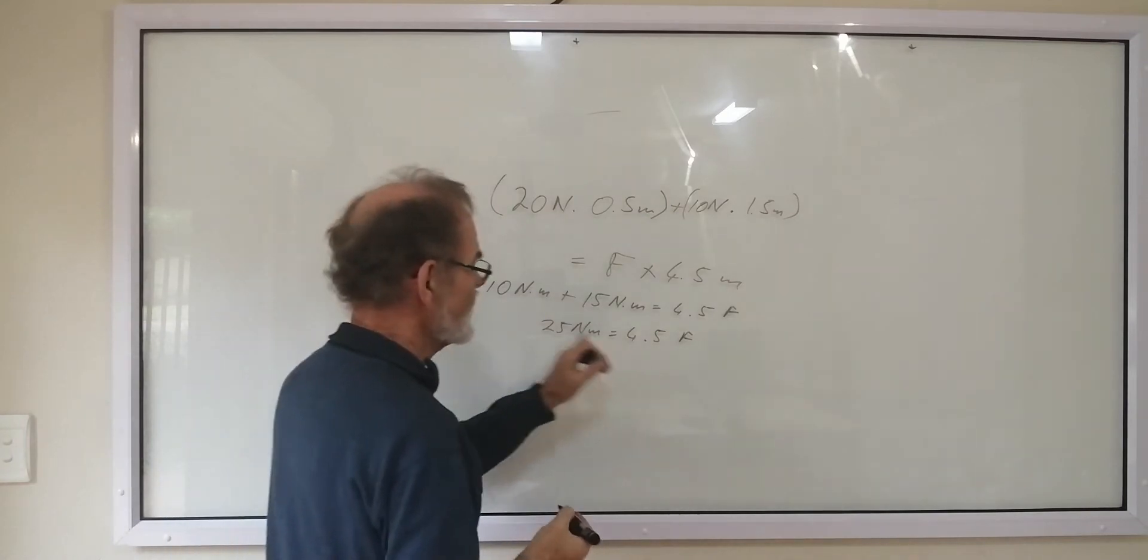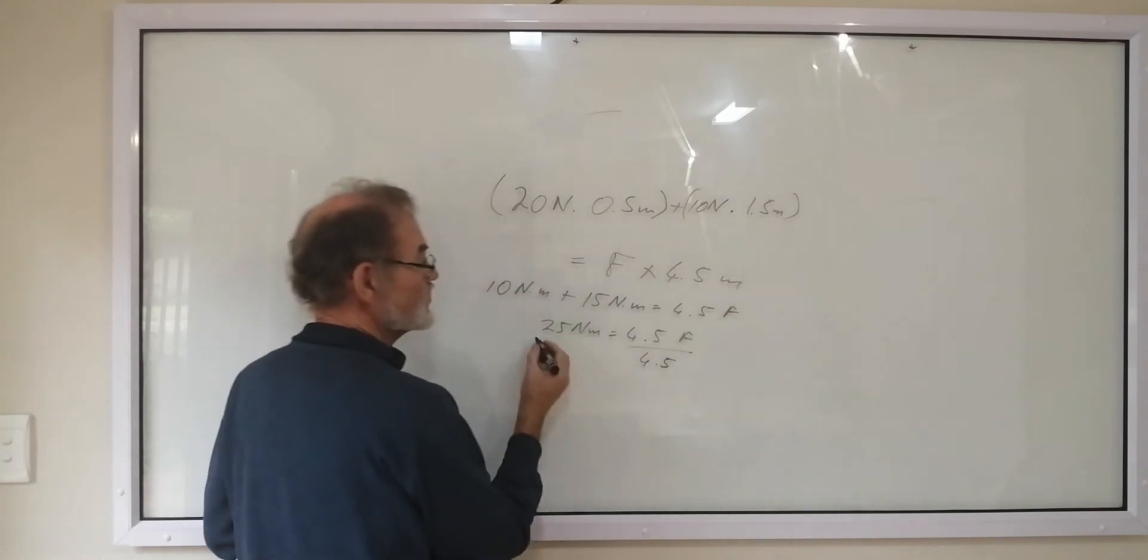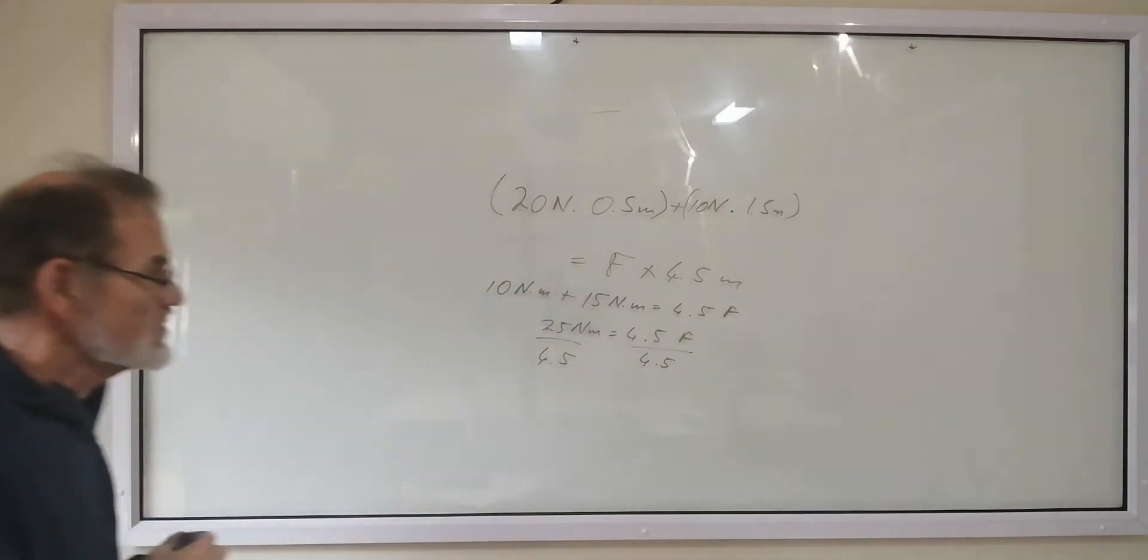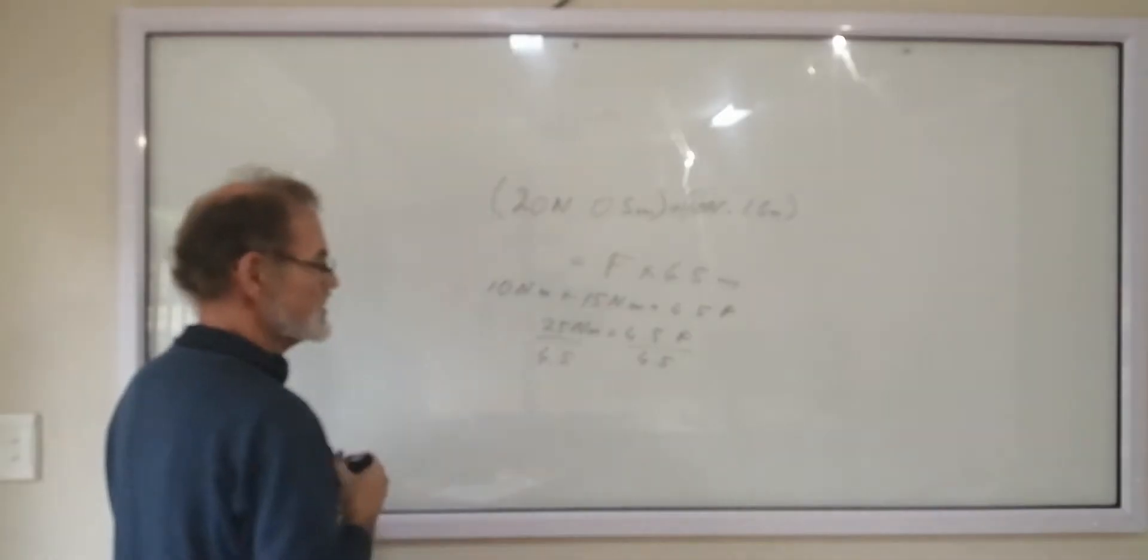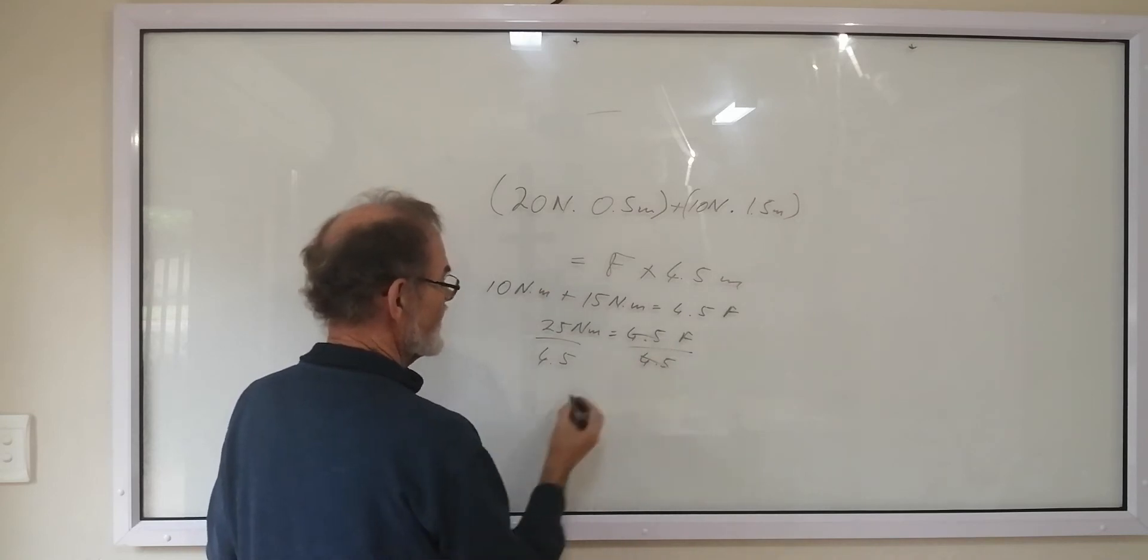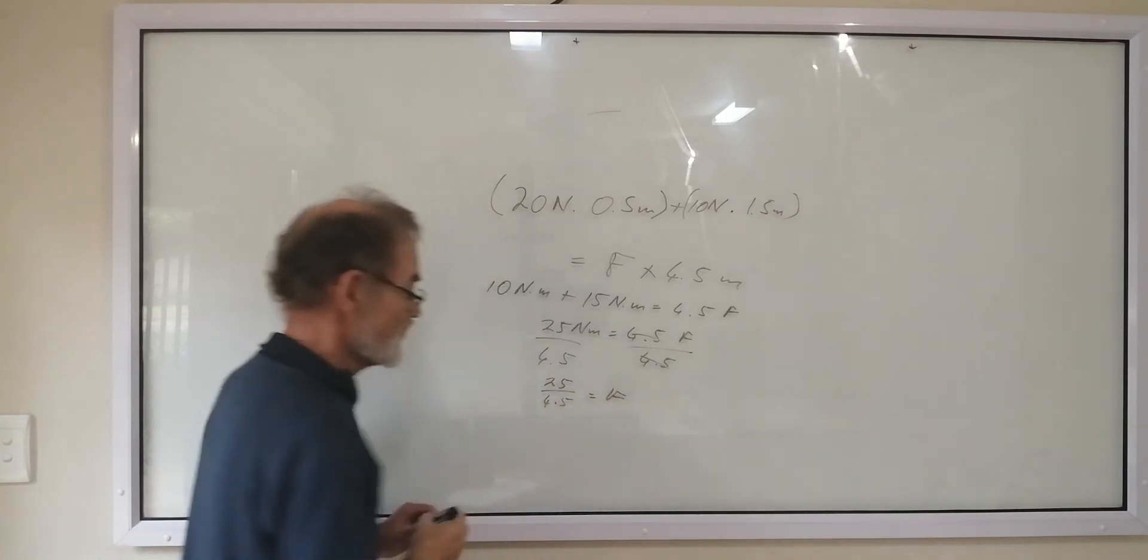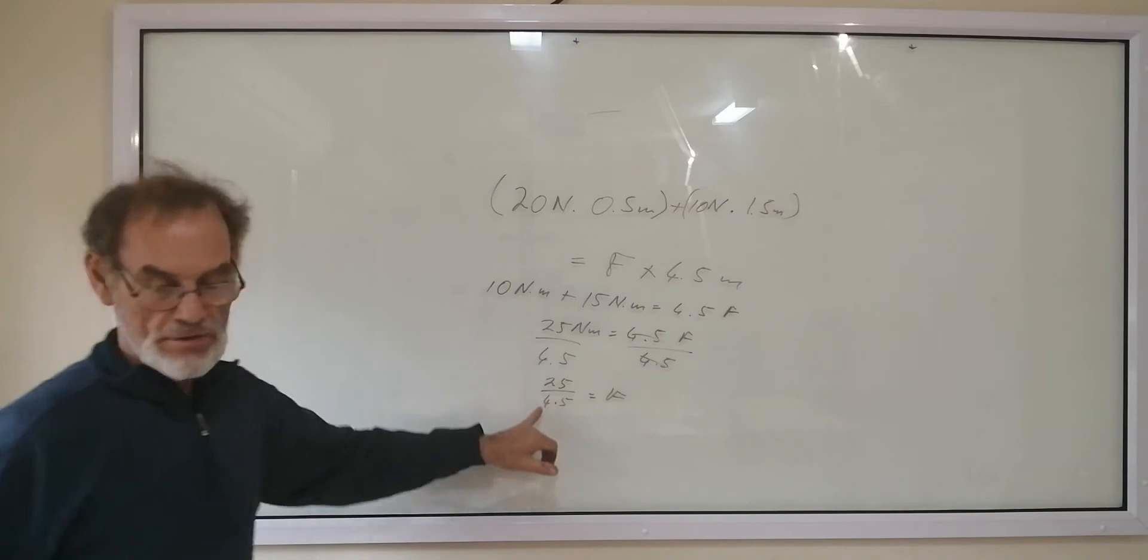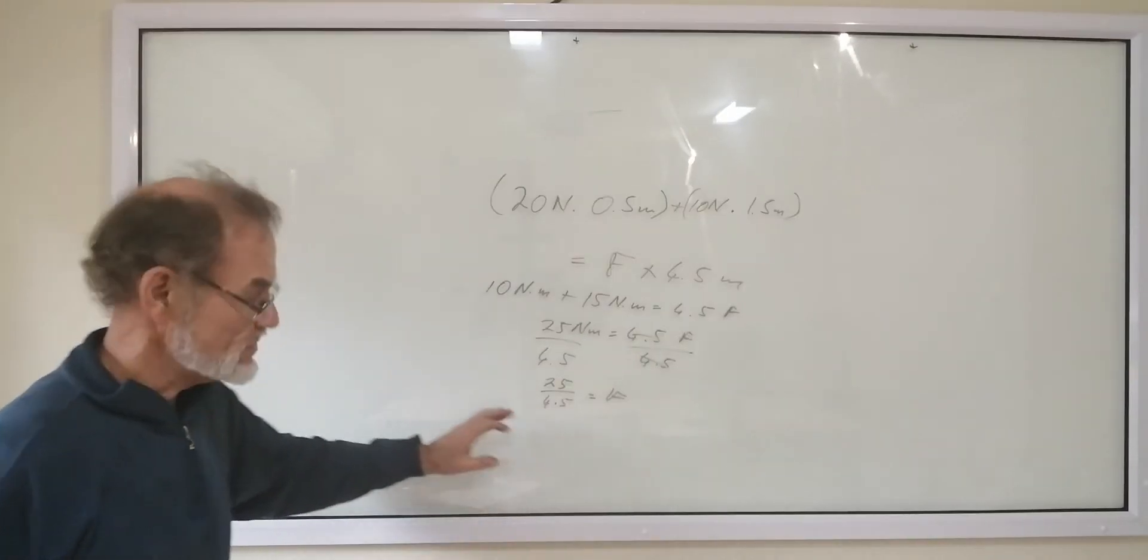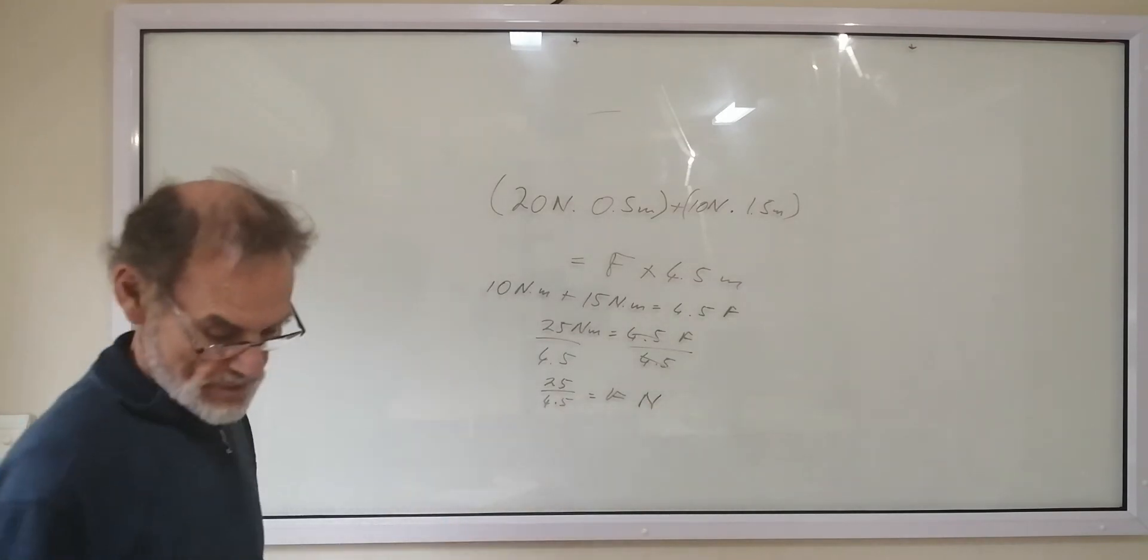So to get this 4.5 to this side, we have to divide both sides by 4.5. You should know how to do this from your math, but for those of you that are not used to working with equations, this is how you manipulate equations. These two cancel, and you're left with 25 over 4.5 equal to F. And this you can work out in the calculator, and this is newtons because it's a force.